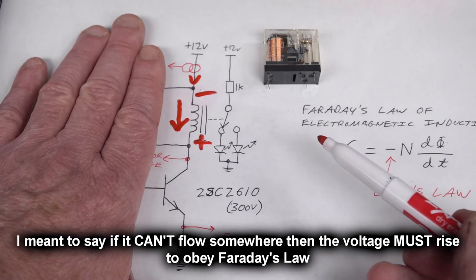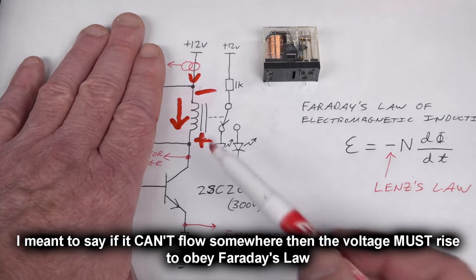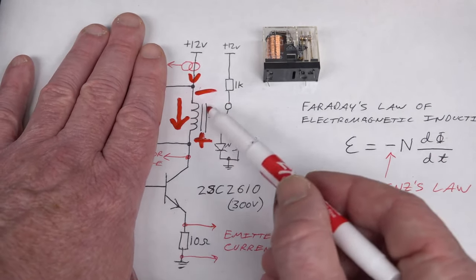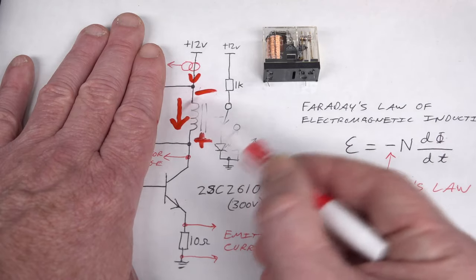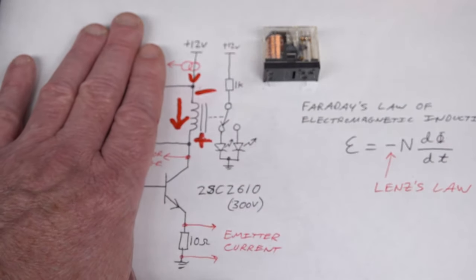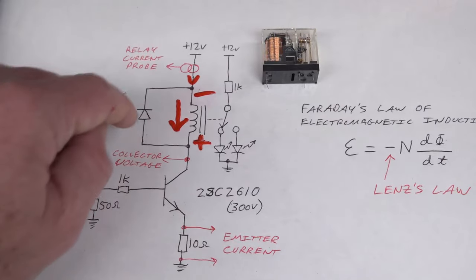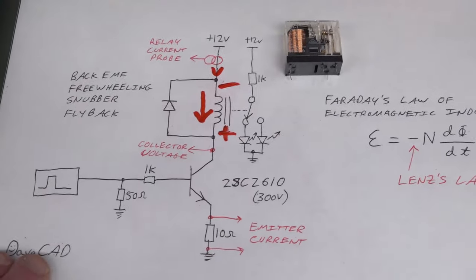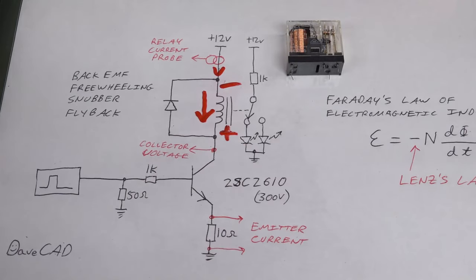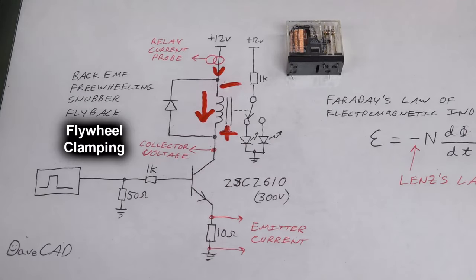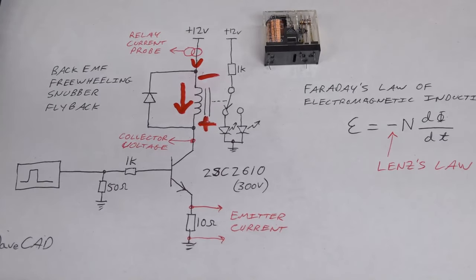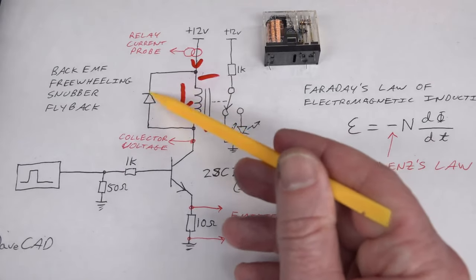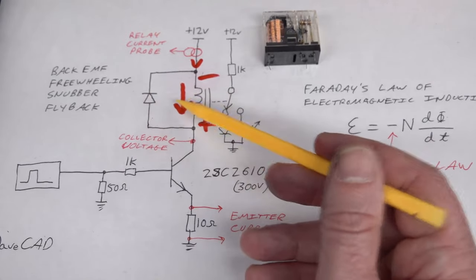In practice you never get infinities, but this is what we're going to look at today — what happens when you open the transistor switch and what happens to the stored magnetic energy. It can really ruin your day unless you put in a diode. You might have heard these called back EMF diodes, freewheeling diodes, snubber diodes, or flyback diodes — leave a comment if you've seen other names.